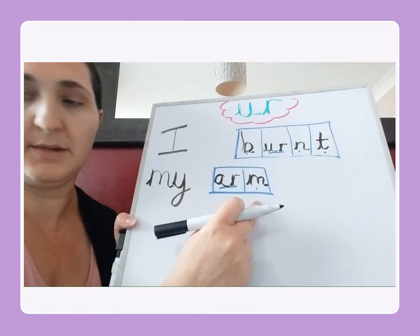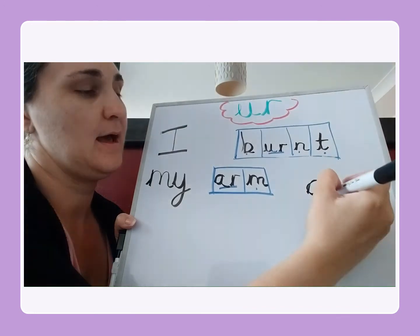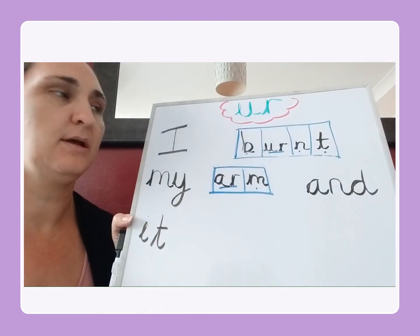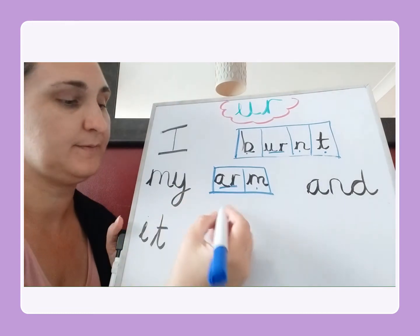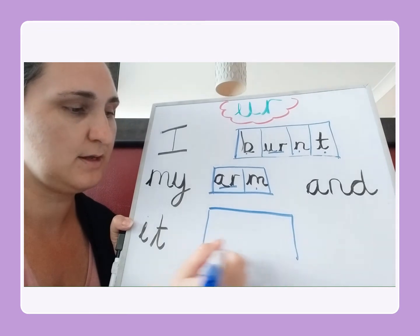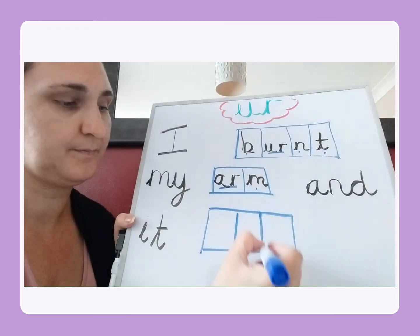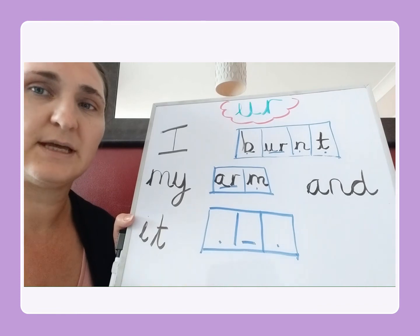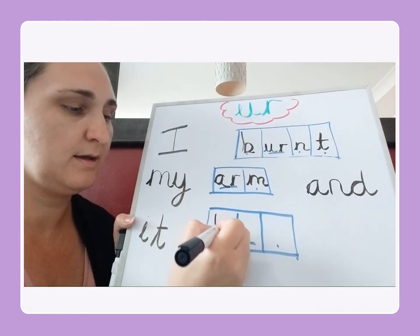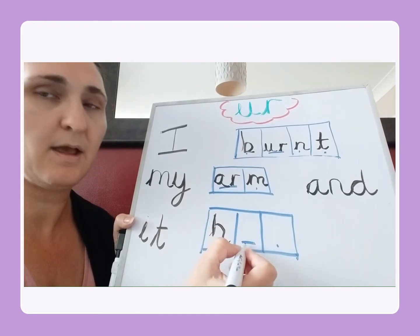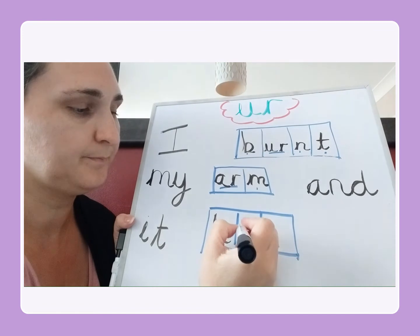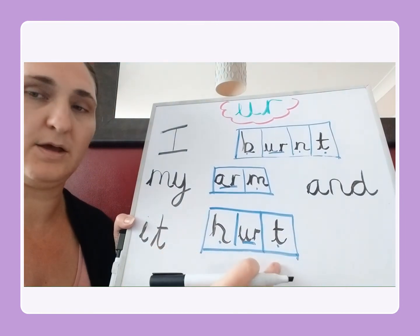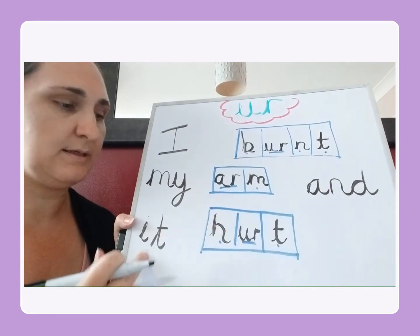I burnt my arm and — and. It — hurt. 'Hurt' has our ur digraph. How many sounds are there in hurt? Three sounds. I'm going to put our sound buttons in to help us identify where the digraph goes. Hurt — ur. Ur is our digraph: u, r. Hurt. I burnt my arm and it hurt.